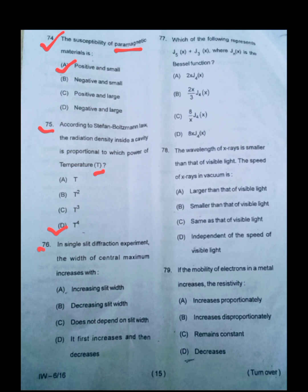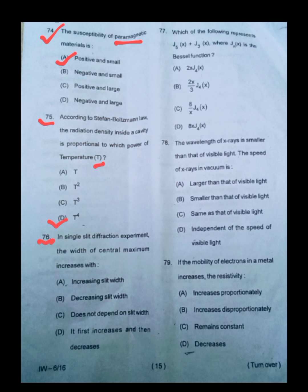Question number 76, in single slit diffraction experiment, the width of the central maximum increases with: increasing slit width, decreasing slit width, does not depend upon the slit width, it first increases and then decreases. Answer is decreasing slit width. The more narrow is the slit, more greater is the central maximum.